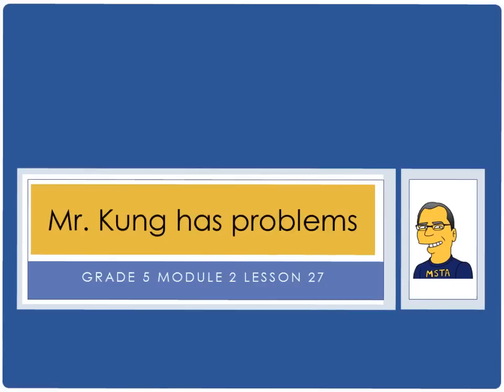Hello, and welcome to another episode of Mr. Kung Has Problems. Tonight, in grade 5, we are working in module 2, lesson number 27. We are doing the same thing we were doing yesterday, which is dividing decimal dividends by two-digit divisors. We are estimating our quotients from time to time, reasoning about the placement of the decimal point, and making connections to the written method or standard algorithm.